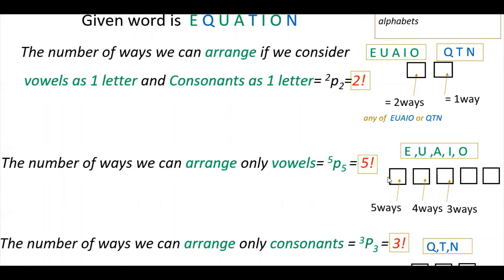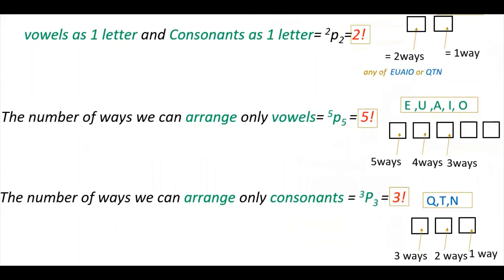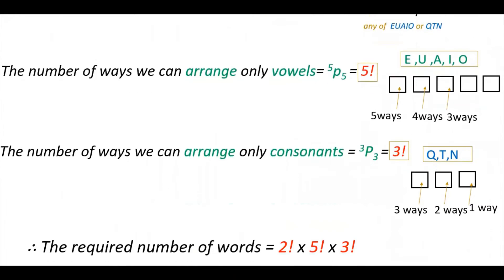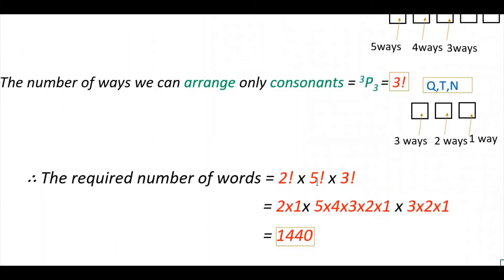Similarly, the number of ways to arrange only the consonants: Q, T, N are three letters, so that is 3 factorial — three ways, two ways, one way. Therefore, the required total number of words is 2! × 5! × 3!. That is 2 × 1 × (5×4×3×2×1) × (3×2×1), which gives 1440 words. This is the required number of words when vowels and consonants occur together.